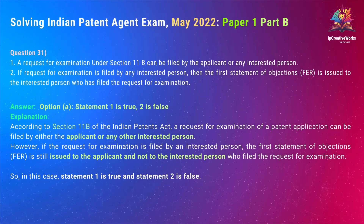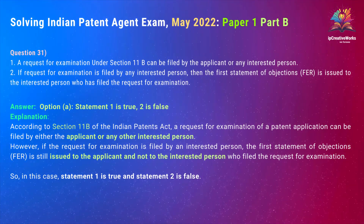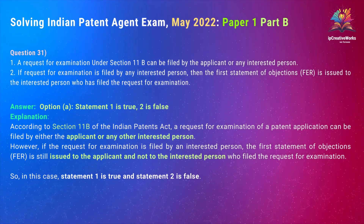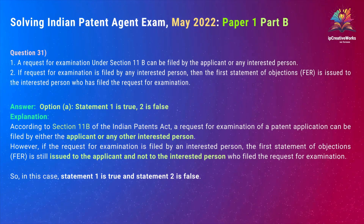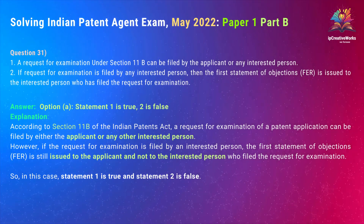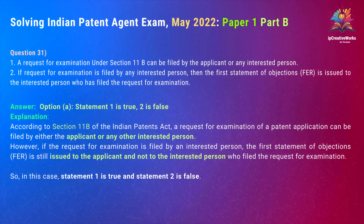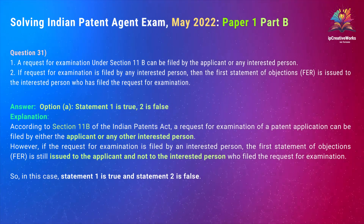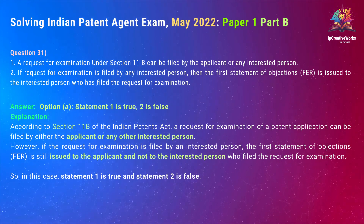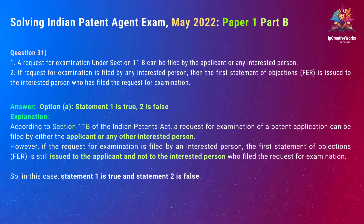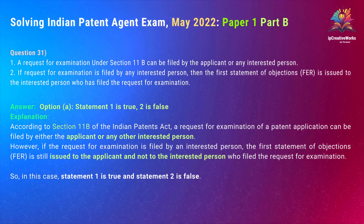Explanation: According to Section 11B of the Indian Patents Act, a request for examination of a patent application can be filed by either the applicant or any other interested person. However, if the request for examination is filed by an interested person, the first statement of objections (F.E.R.) or first examination report is still issued to the applicant and not to the interested person who filed the request for examination. So Statement 1 is true and Statement 2 is false.